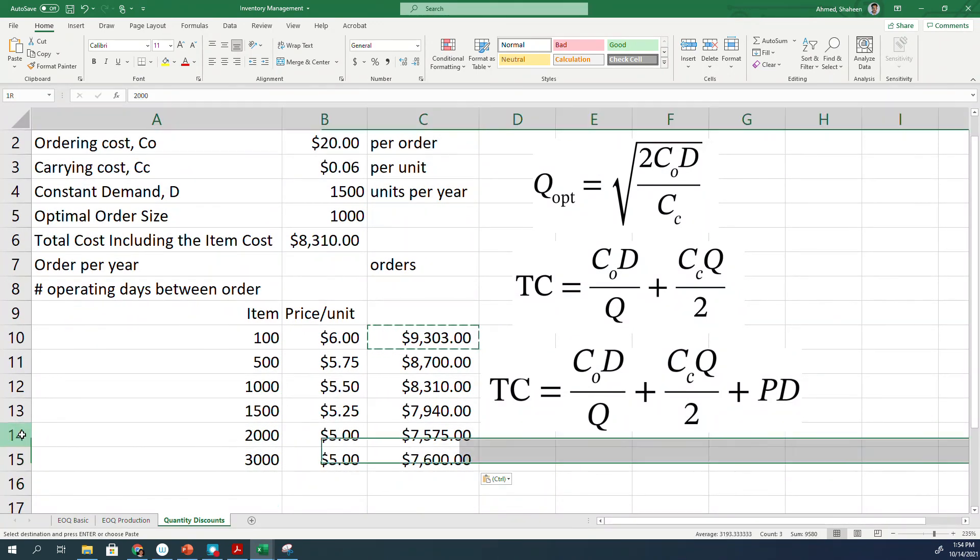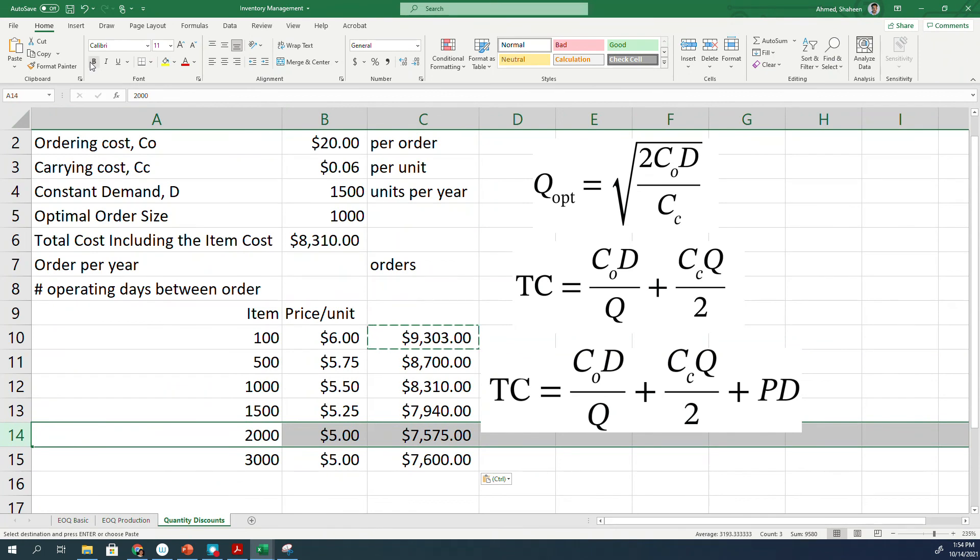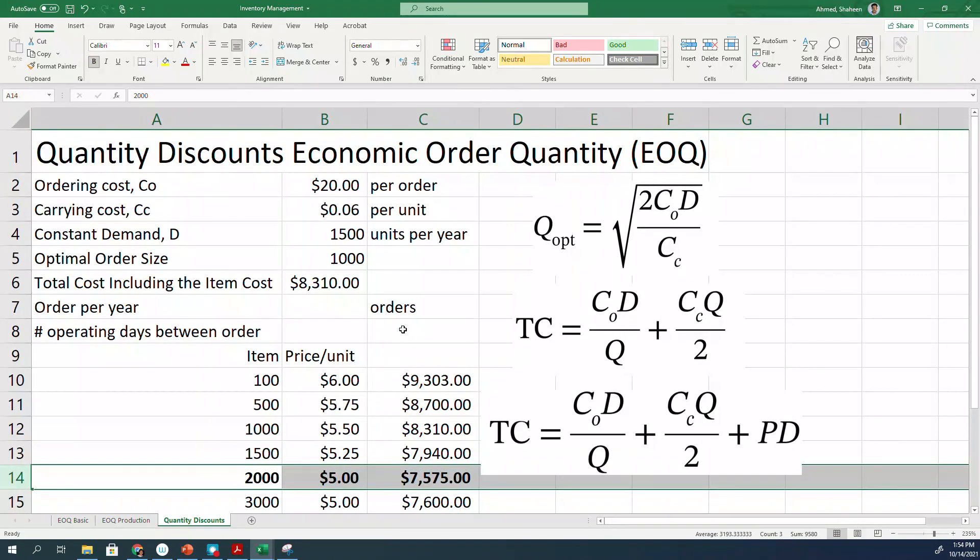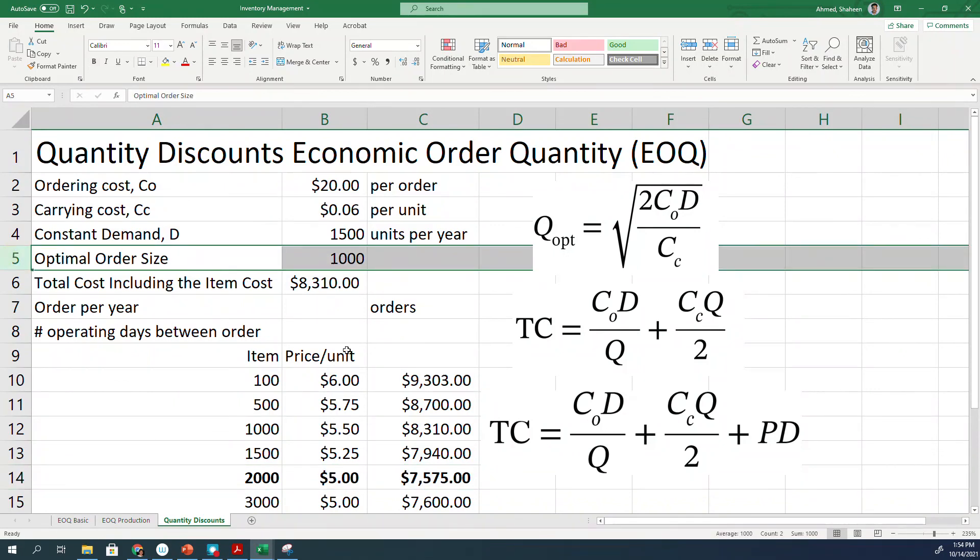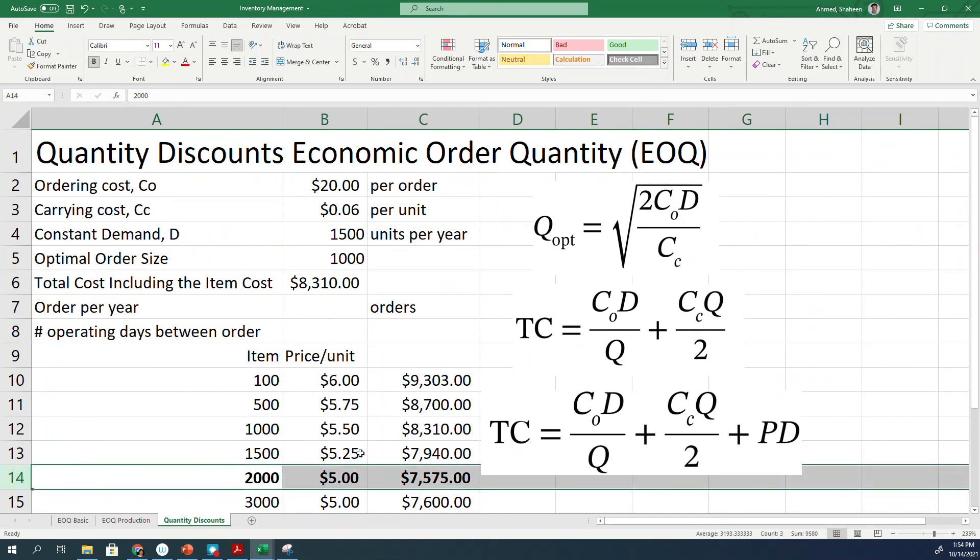As you can see, ordering 2,000 units is providing the least amount of cost in this case. So the optimum order size is not really optimum in this case. Assuming that we will have demand next year too, ordering 2,000 will minimize the cost for this discounted price problem.